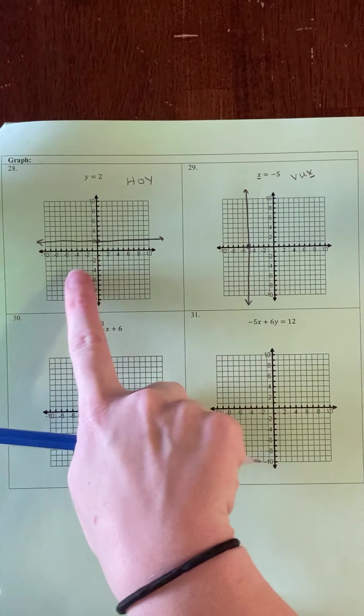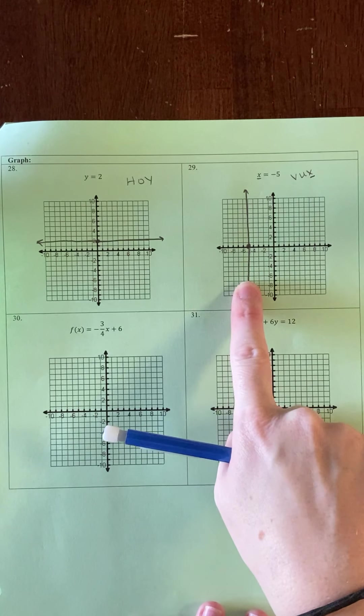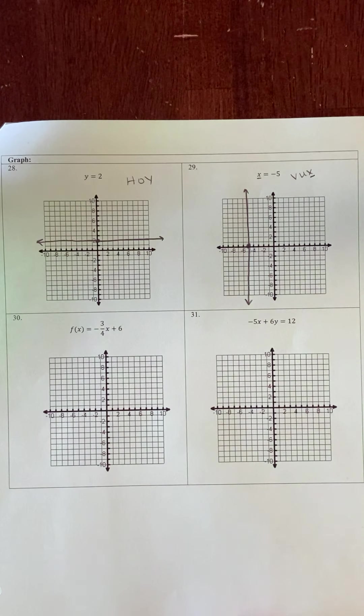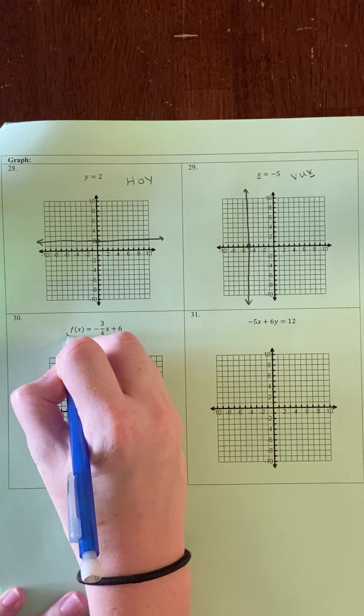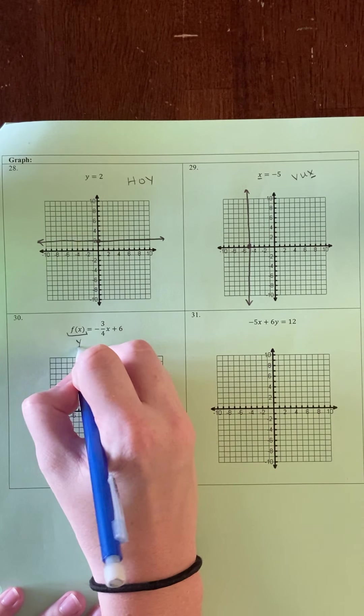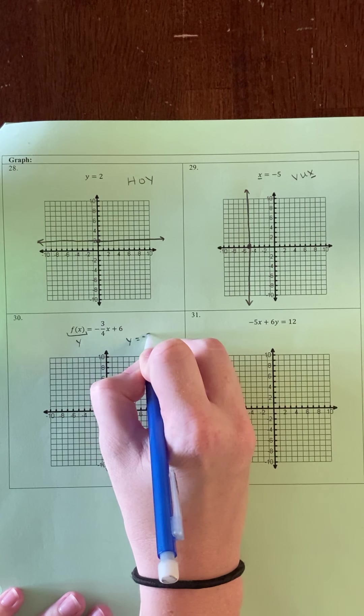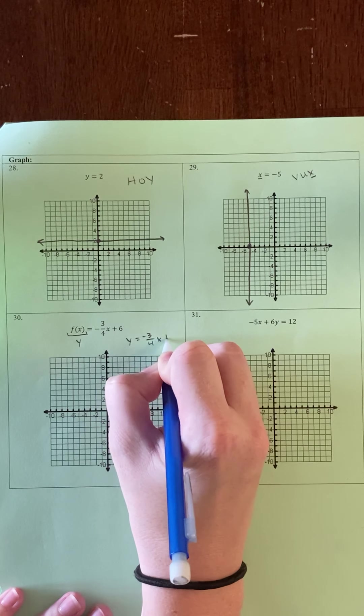Okay, so these are our two special cases: horizontal line and vertical line. Now the next problem says f(x) equals negative 3/4x plus 6. I just want to remind you that f(x) is just a fancy way of saying y. So this is really just y equals negative 3/4x plus 6.